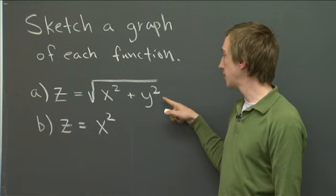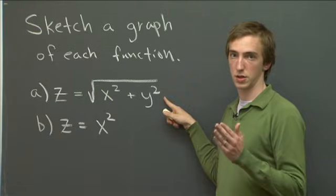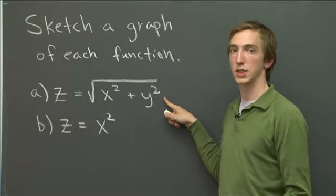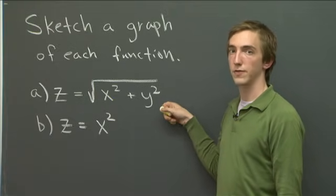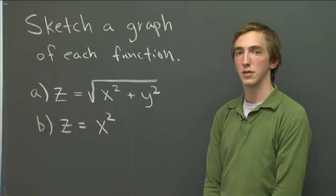When you graph these, I'd suggest to consider slices. So what happens if you consider x equals 0, or if you consider z equals 0? As you graph these, let's see what you can do. So why don't you pause the video, and I'll check back with you in a moment, and I can show you how I solve these.